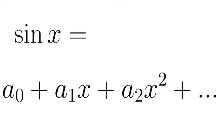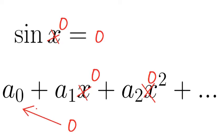When we evaluate sine x at x equals 0, all the terms disappear except for the first. When x equals 0, the first term is 0.